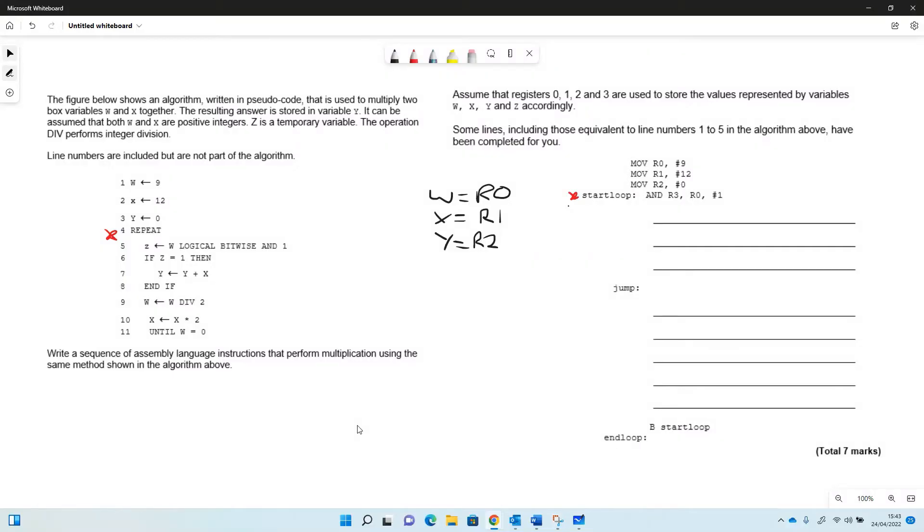So this is an example question about writing assembly code. This is for paper two at A-level, usually. In this case, we've got an algorithm or a program that's written in pseudocode and we need to write that in assembly language.